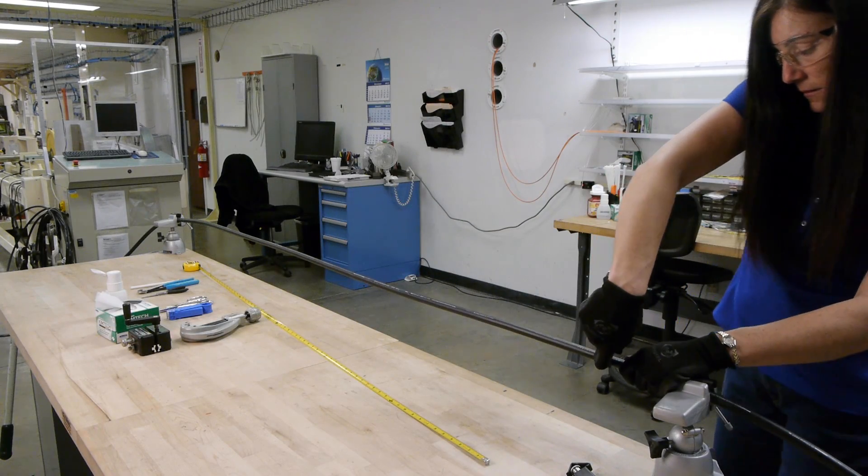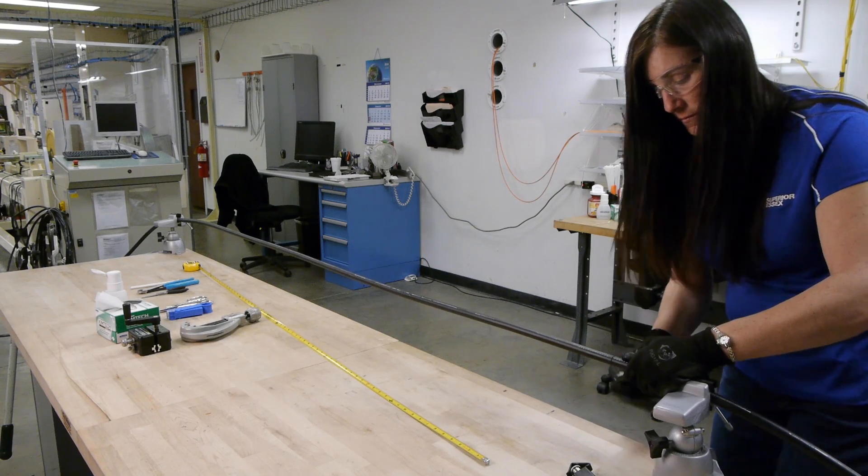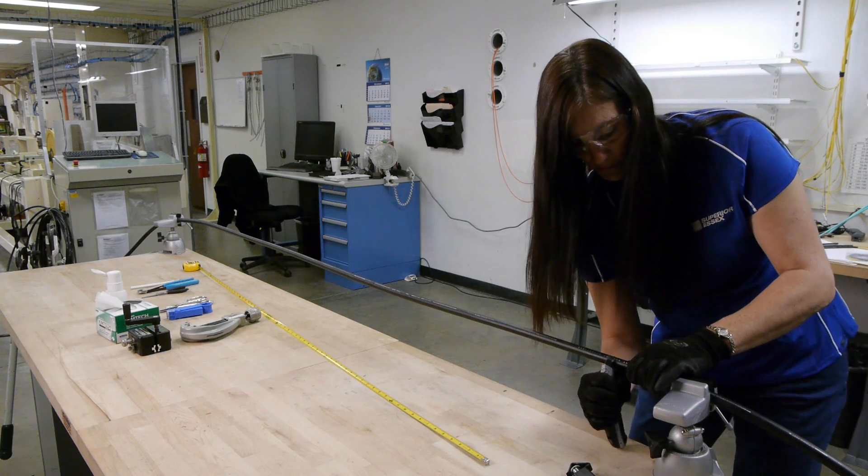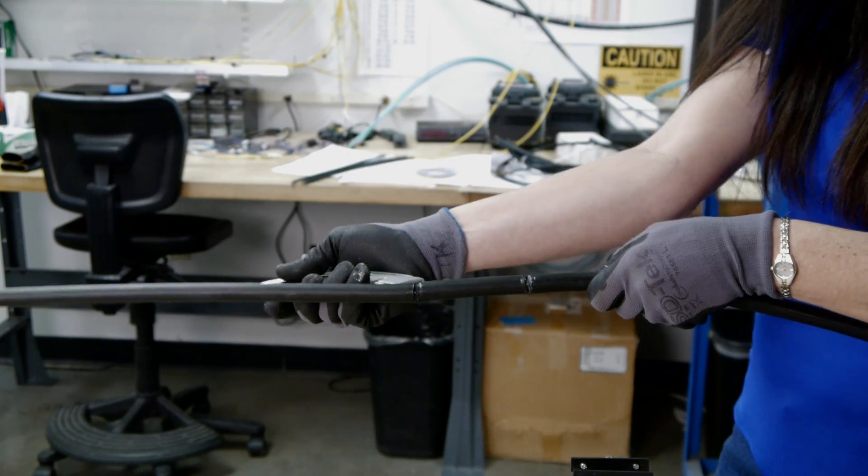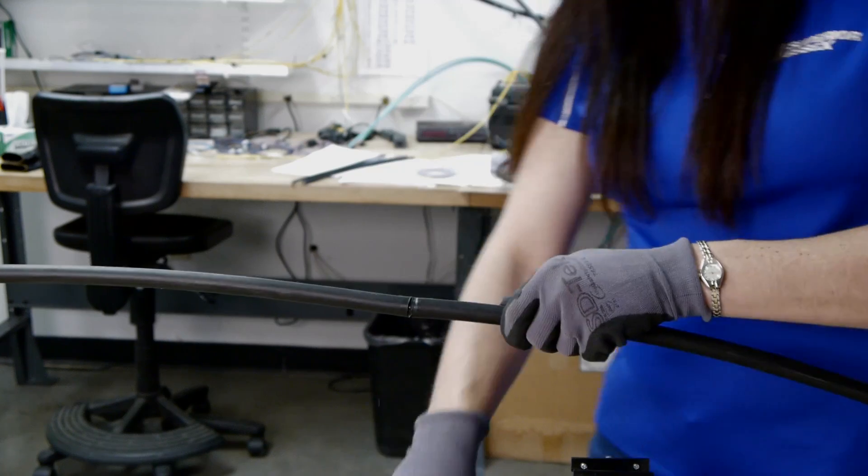Make a second score in jacket about four inches from the first cut. With a utility knife, slit the jacket longitudinally and remove the jacket.